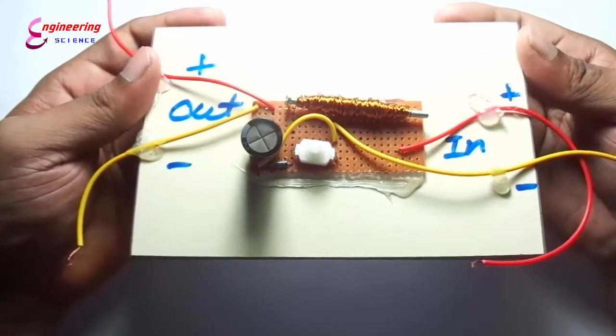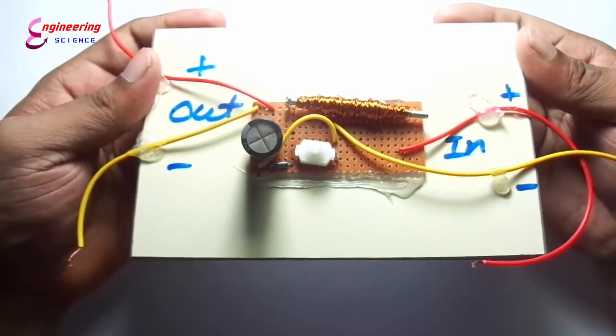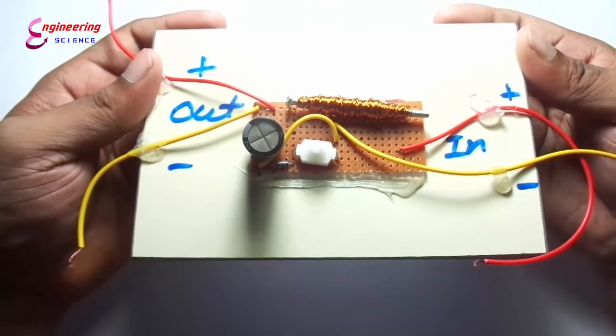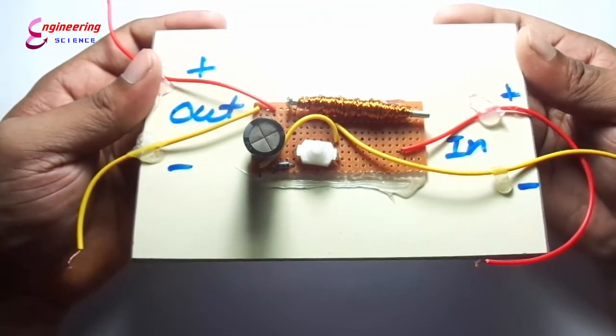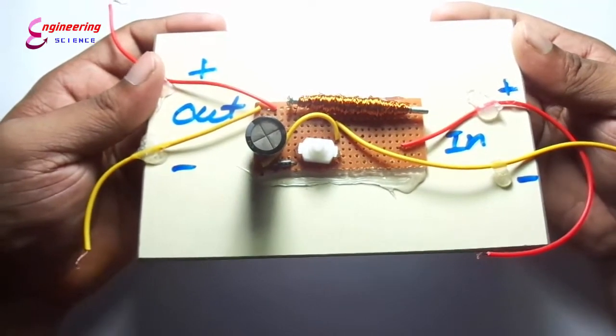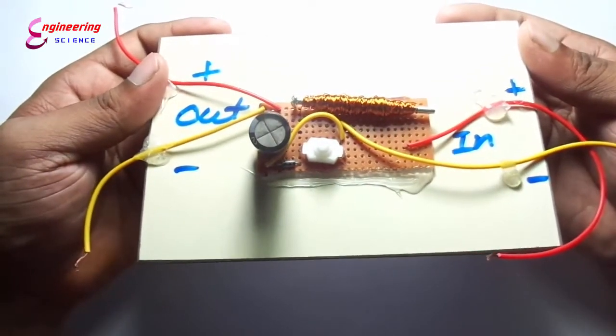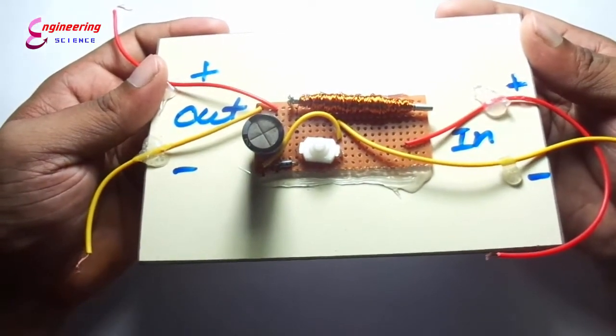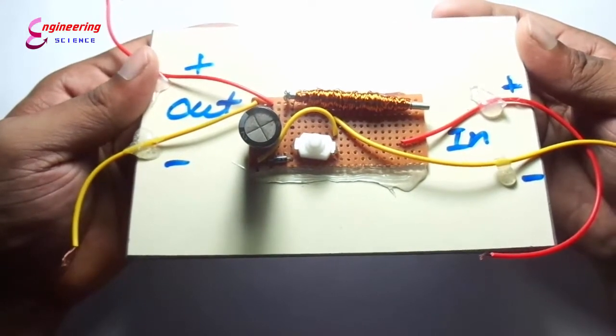The basic principle that drives the Boost Converter is the tendency of an inductor to resist changes in current by creating and destroying a magnetic field. In a Boost Converter, the output voltage is always higher than the input voltage.